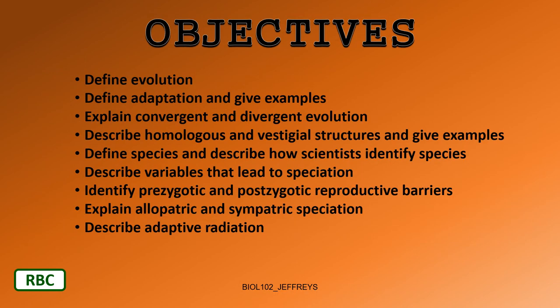Our objectives for this chapter are to define evolution; define adaptation and give examples; explain convergent and divergent evolution; describe homologous and vestigial structures and give examples; define species and describe how scientists identify species; describe variables that lead to speciation; identify prezygotic and postzygotic reproductive barriers; and explain allopatric and sympatric speciation and describe adaptive radiation.